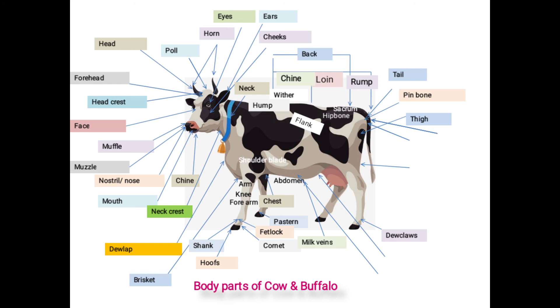Next one is milk mirror. Portion situated in between vulva and rear udder called as milk mirror. Its wider size indicates capacious udder, indicating high milk production ability in the female.